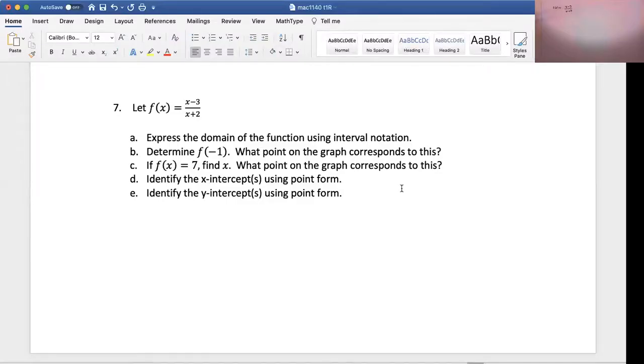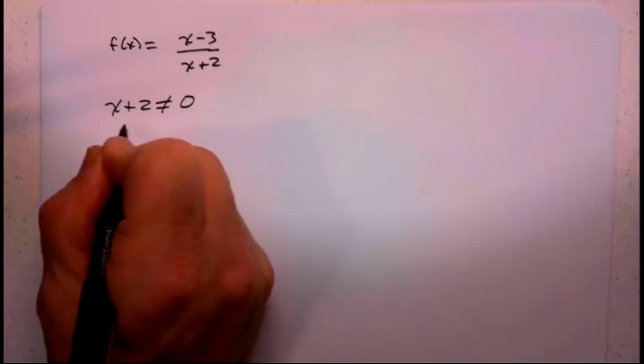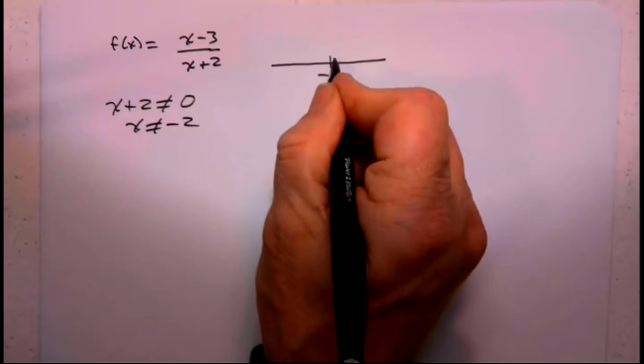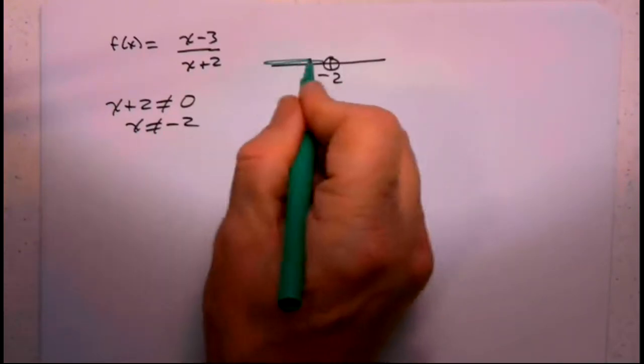So for this question we're told f of x is x minus 3 over x plus 2, and the first thing we want to find is the domain. Of course the denominator cannot be 0, so x plus 2 can't be 0. So x cannot be negative 2, so we remove negative 2 from our number line. And then we rewrite this in interval notation.